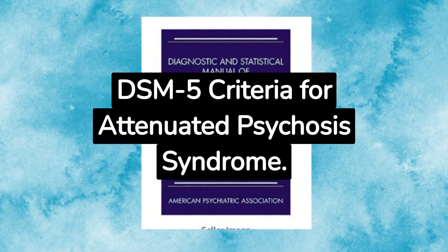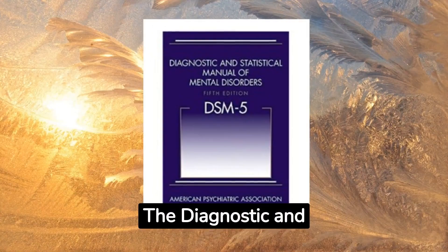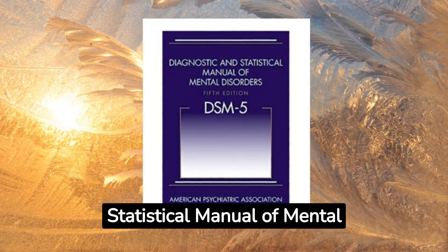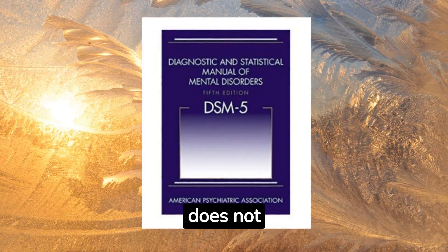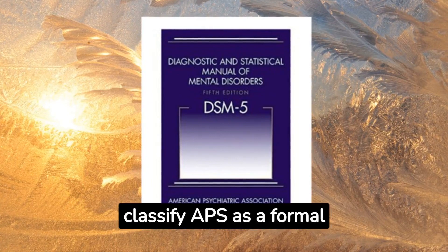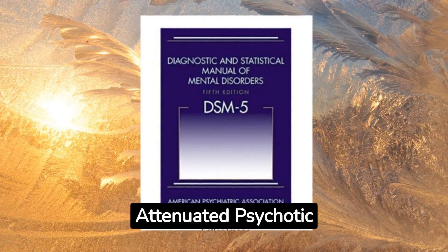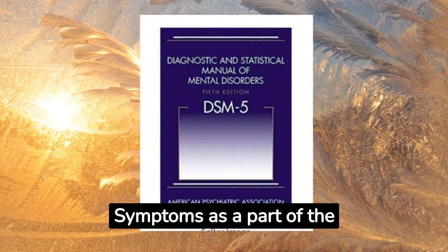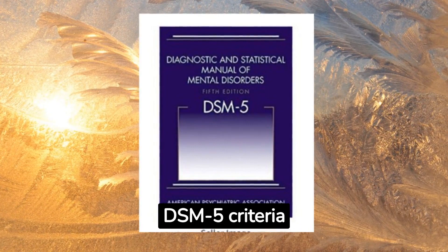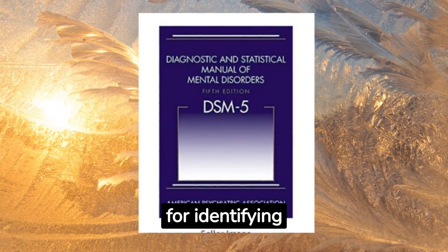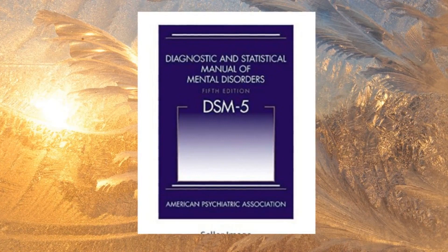DSM-5 criteria for attenuated psychosis syndrome. The Diagnostic and Statistical Manual of Mental Disorders, 5th edition, DSM-5, does not classify APS as a formal diagnosis. However, it includes attenuated psychotic symptoms as a part of the conditions for further study category. The DSM-5 criteria for identifying attenuated psychotic symptoms are as follows.